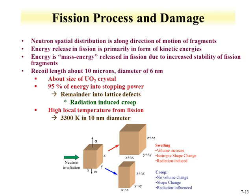The fission process also causes radiation damage to reactor materials and fuel. Fission products recoil about 10 microns in UO2, creating a very high local temperature of almost 3,000°C within a 10-nanometer diameter region. Two types of irradiation damage can occur: swelling, where the dimensions of a material increase, and creep, where there is a shape change with no volume change. Both can occur in reactors, and significant research is focused on finding materials impervious to swelling and creep from neutron damage.